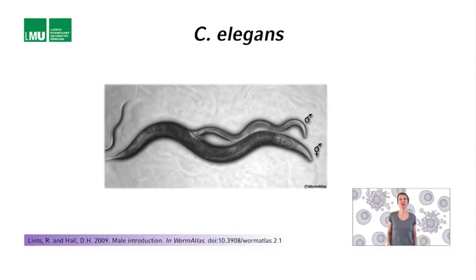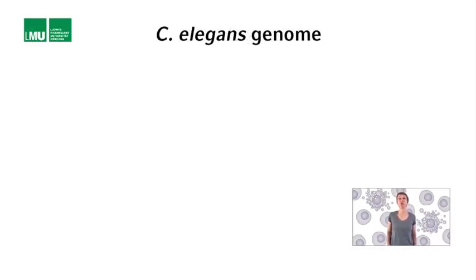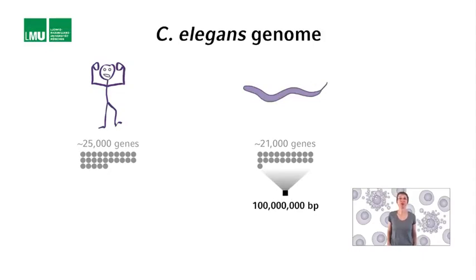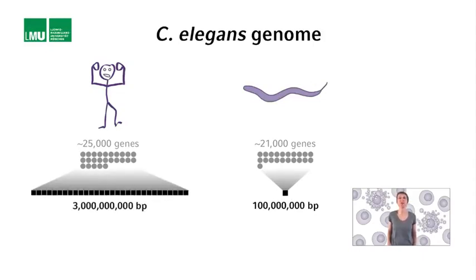Finally, C. elegans has a small and very compact genome, which is also advantageous for genetic studies. The human genome contains about 25,000 genes, and the C. elegans genome contains not much less — about 21,000 genes. However, the difference in genome sizes in terms of base pairs is striking. The 21,000 C. elegans genes are found within a genome that is 100 megabase pairs, or 100 million base pairs. The 25,000 human genes are found within a genome that is 30 times the size — 3,000 megabase pairs. This comparison demonstrates how compact the C. elegans genome is compared to the human genome.